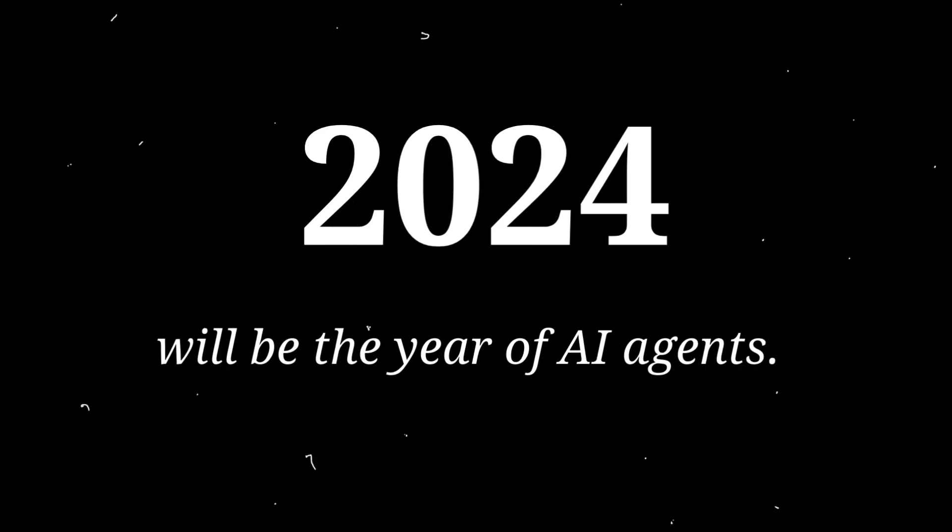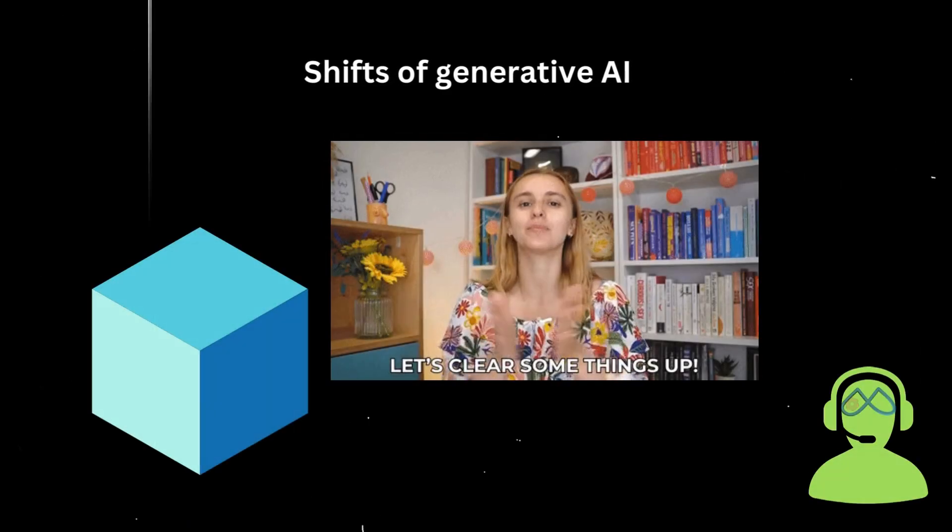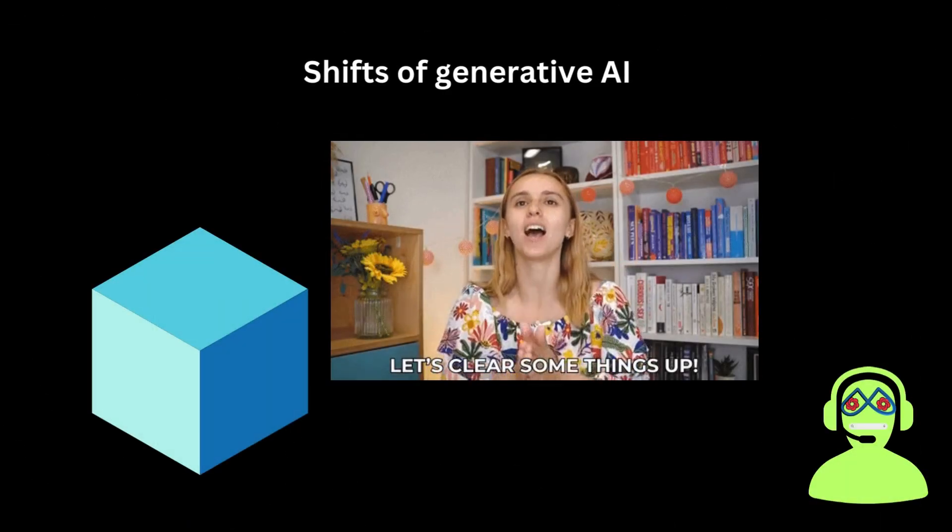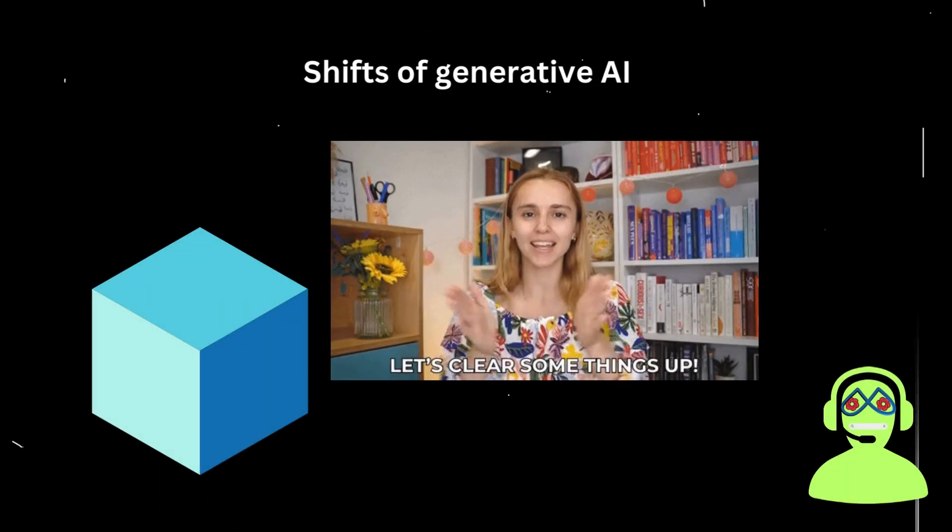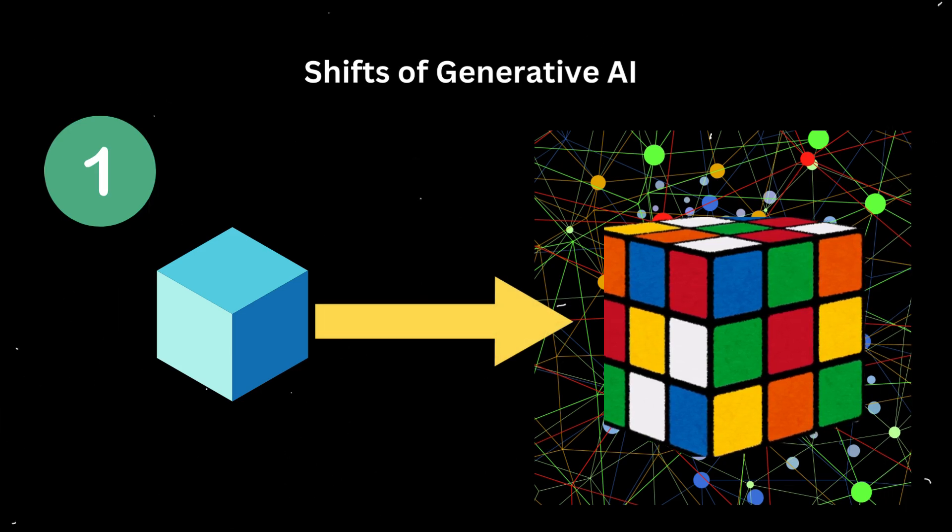2024 will be the year of AI agents. So what are AI agents? To start explaining that, we have to look at the various shifts that we're seeing in the field of generative AI. The first shift I would like to talk to you about is this move from monolithic models to compound AI systems.